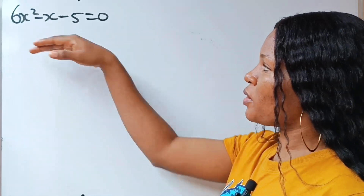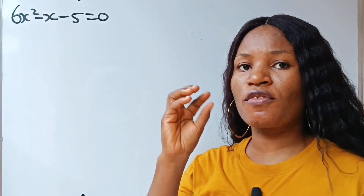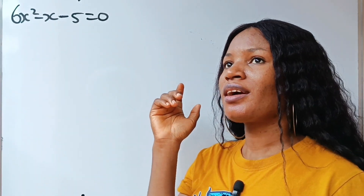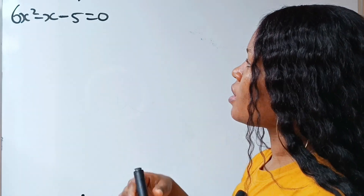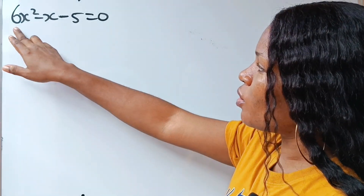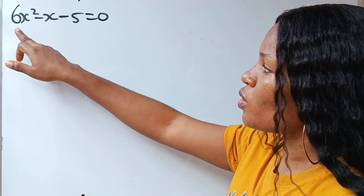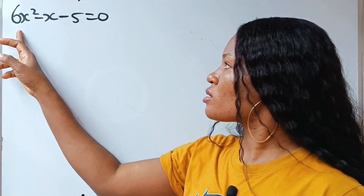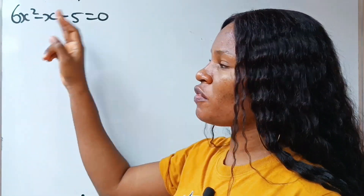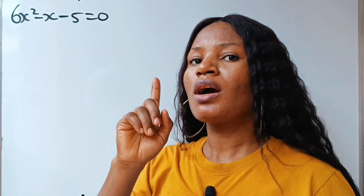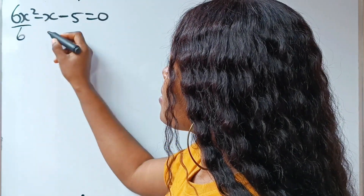Completing the scale method of factorizing or solving a quadratic equation is actually very simple. First, notice that the coefficient of x squared here is not 1 but 6. So we are going to remove this 6 and make the coefficient to be 1. And to do that, we are going to divide through by 6.